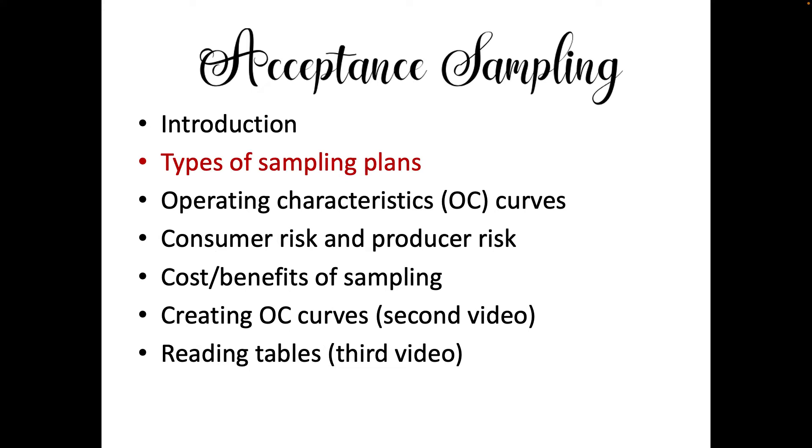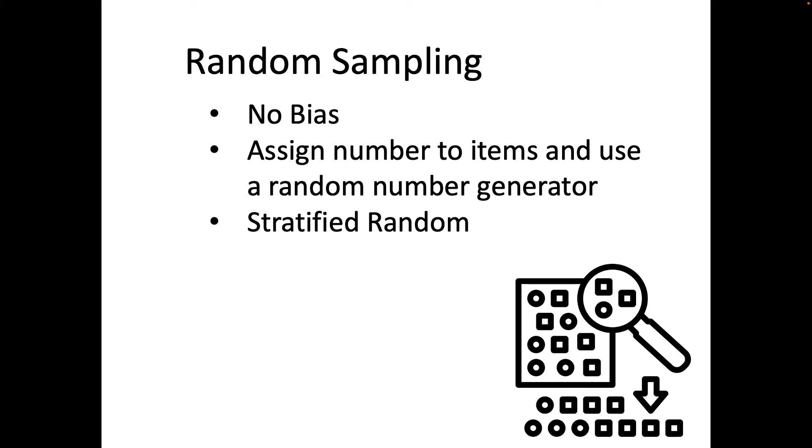The next thing we're going to talk about is the various types of sampling plans that are available. First of all, you always have to make sure that the sample is random, that there's no bias, that you're not taking the first item out of each box or anything like that. The way you're going to do that is assign a number to the items and then use a random number generator to tell you which items you're going to be testing. You could do a stratified random sample, but usually that's not recommended. We want to try to do it as random as possible.